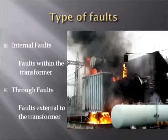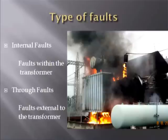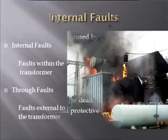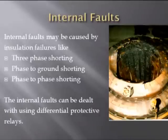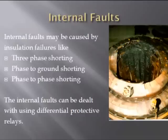Transformers are prone to two types of fault: internal faults that occur within the transformer proximity, and through faults that occur external to the transformer. Both these faults may cause a very large current to flow in the circuit, which may damage the insulation and hence damage the system. Faults that occur inside the transformer, called internal faults, may be caused by insulation failures like three-phase shorting, phase-to-ground shorting, and phase-to-phase shorting.